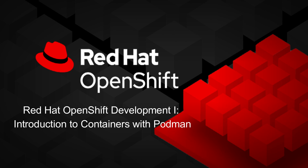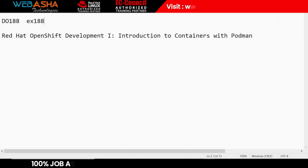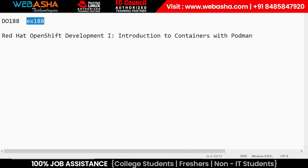Hello, my name is Satyendra and today we are going to discuss the DO188 course — Red Hat OpenShift Development Part One: Introduction to Containers with Podman. Inside this course we are talking about the course curriculum, course descriptions, course outline, and other details. The Red Hat course code is DO188 and for the examination that is EX188. We are talking about containers with Podman — what Podman is and all those things.